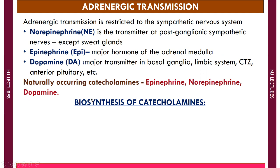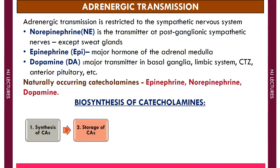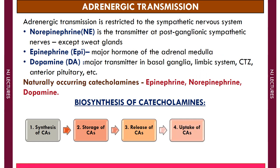Let's study the biosynthesis of catecholamines. Biosynthesis of catecholamines involves five steps: first, synthesis of catecholamines; second, storage; third, release; fourth, uptake; and fifth, metabolism of catecholamines.